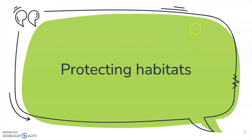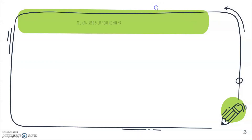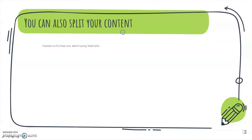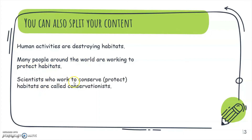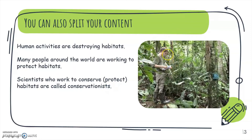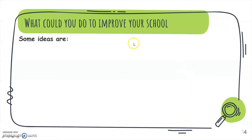Next, protecting habitats. Human activities are destroying habitats. Many people around the world are working to protect habitats. Scientists who work to conserve or protect habitats are called conservationists — for example, those who protect forests and trees. What could you do to improve your school environment?